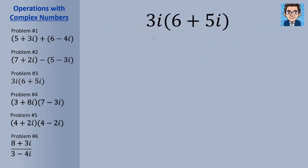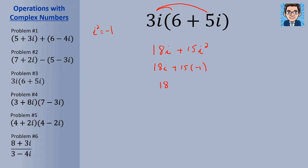For multiplication by distribution, we multiply 3 times 6 and 3i times 5i, getting 18i plus 15i squared. Here's the difference from a regular variable: because we have i squared, we replace it with negative 1, giving 18i plus 15 times negative 1, or 18i minus 15. In standard form — real part first, imaginary part second — the answer is negative 15 plus 18i.